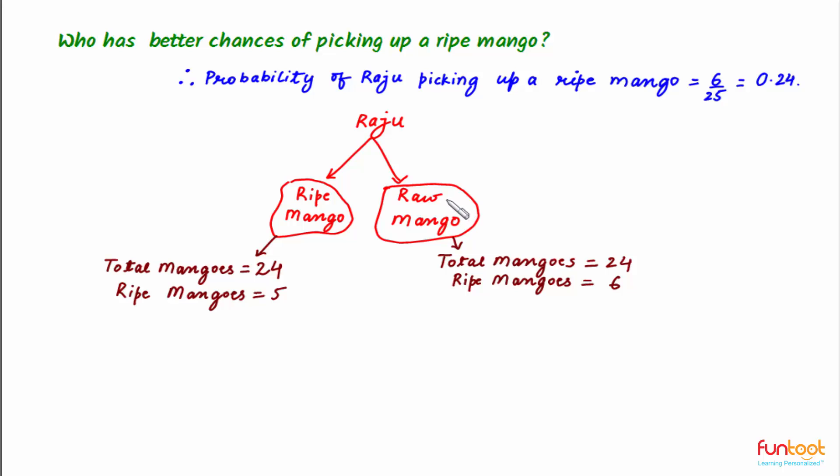And if Raju picks up a raw mango, then total number of mangoes becomes equal to 24. The number of ripe mangoes remains as 6 because the mango picked up here was a raw mango.